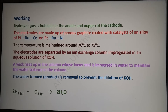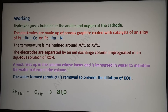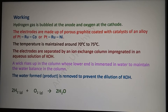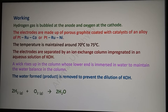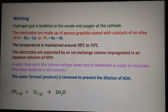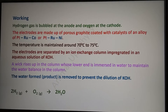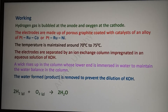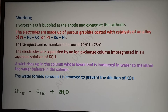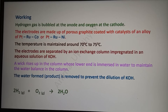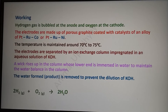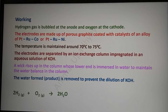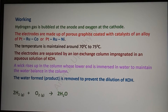The two electrodes are separated by an ion exchange resin impregnated in an aqueous solution of potassium hydroxide. The wick rising up in the ion exchange resin has its lower end immersed in water, so by capillary action the water rises up in the column and maintains the water balance in the electrolyte. The water produced by the reaction between hydrogen and oxygen must be removed immediately to prevent the dilution of the electrolyte.